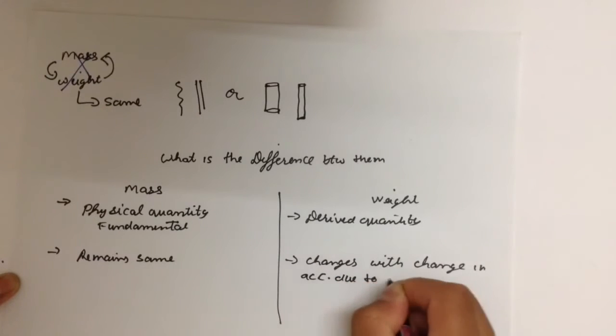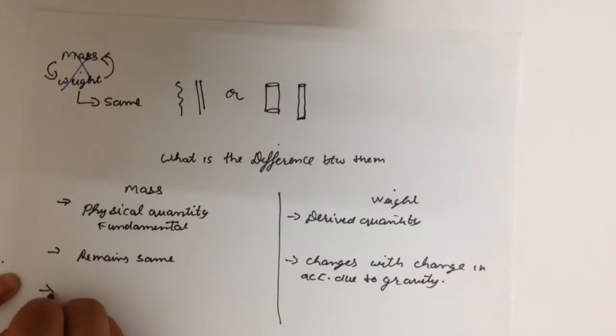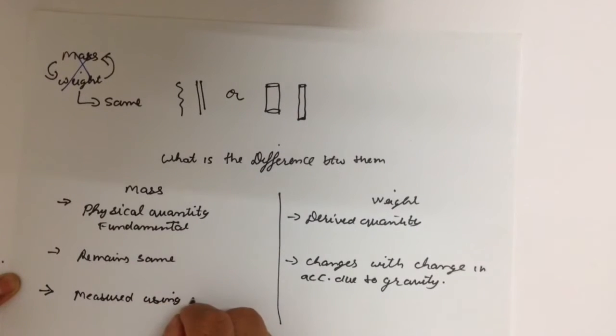Whereas weight changes with a change in acceleration due to gravity. Mass is measured with the help of pan balance and other scales, whereas weight is measured with the help of spring balance. Mass is a scalar quantity, weight is a vector quantity.